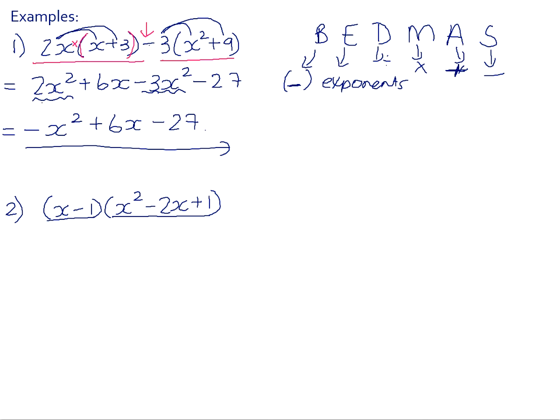So long as you remember that everything in the first bracket has to be multiplied by everything in the second bracket. So this x, the first term, has got to be multiplied by all three of the terms in the second bracket, and the negative 1 has got to be multiplied by all three of the terms in the second bracket. So provided you remember to do everything, you won't have a problem.